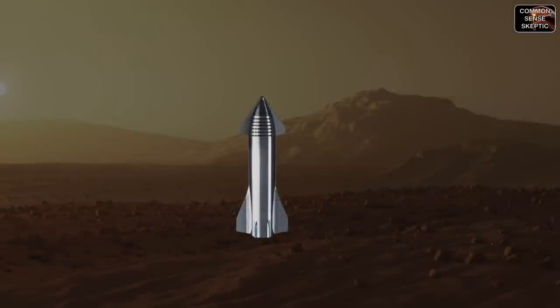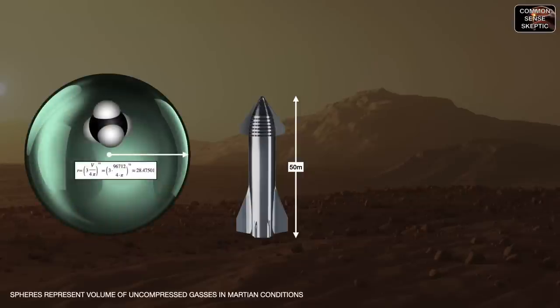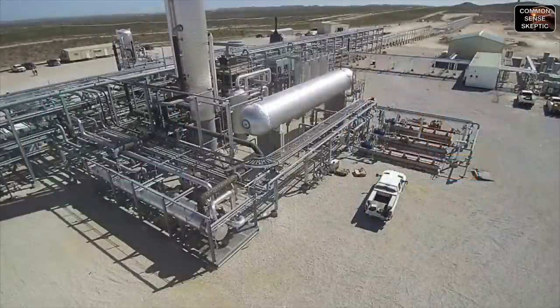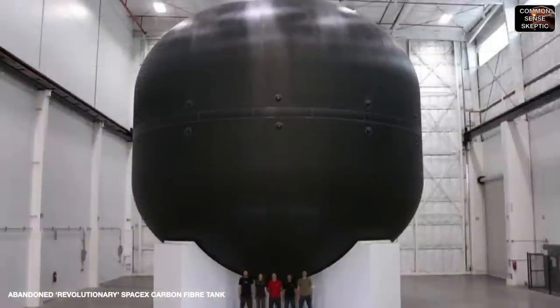This is what the Martian colonists will have to produce and store every single day for 500 days straight in order to launch the ship back to Earth: 39 Olympic-sized swimming pools of methane gas and 68 Olympic-sized swimming pools of oxygen gas. They will have to compress and chill to liquefy, then keep chilled and under pressure until loading onto a Starship. Compressors take energy, refrigeration takes energy — and what tanks would they be storing this in in the meantime?